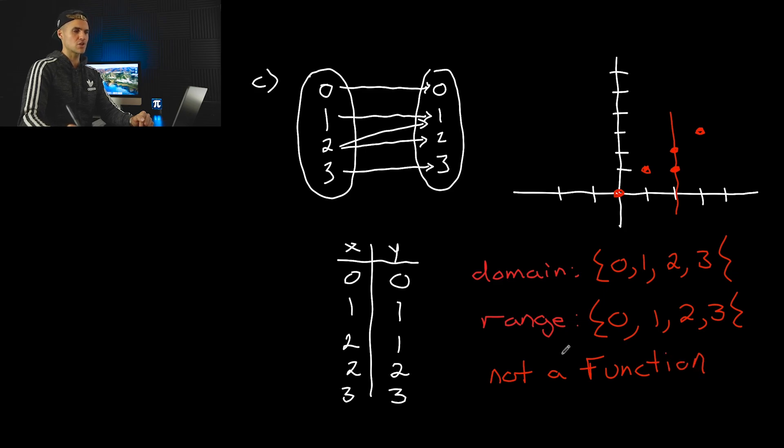So just in general, what I like to personally do, at least until you get comfortable, take the mapping diagrams, convert it to a table of values. Remember, the number of arrows in the mapping diagrams is going to be the number of coordinates. Then take those coordinates, graph them, get your domain and range. And then you could visually see is it passing the vertical line test or not. And that's a wrap for the video.